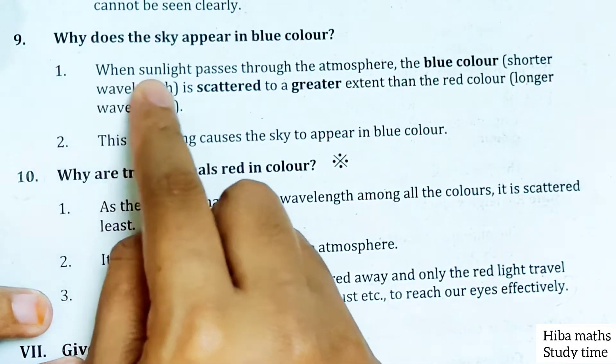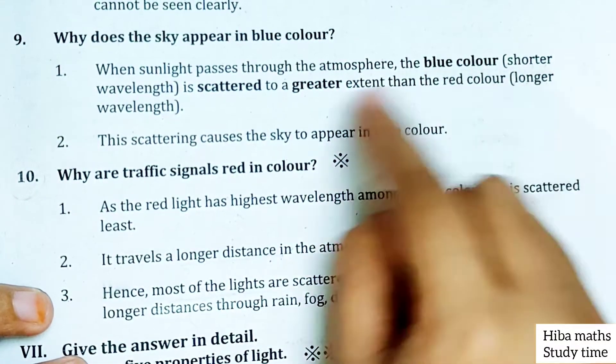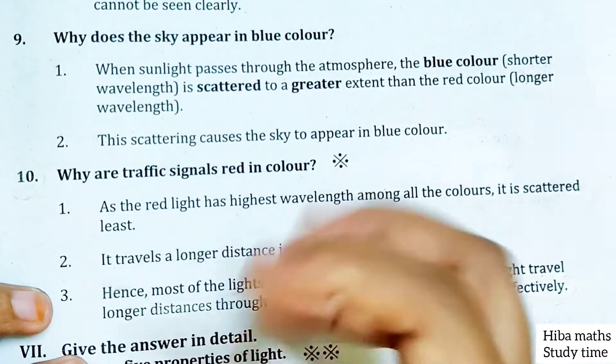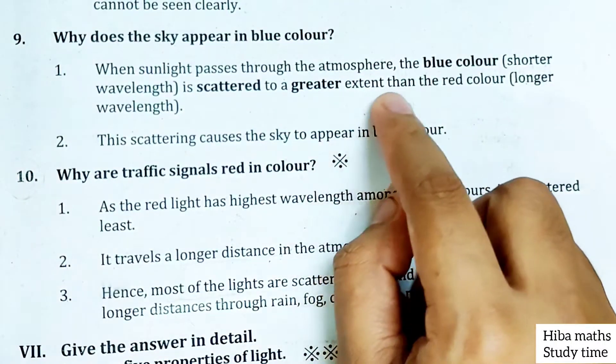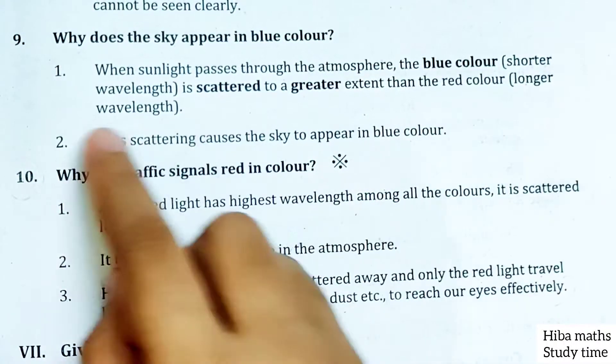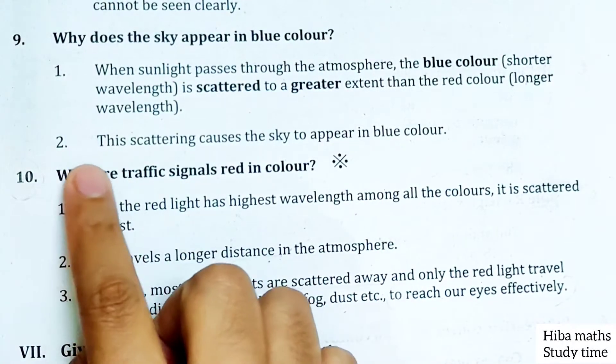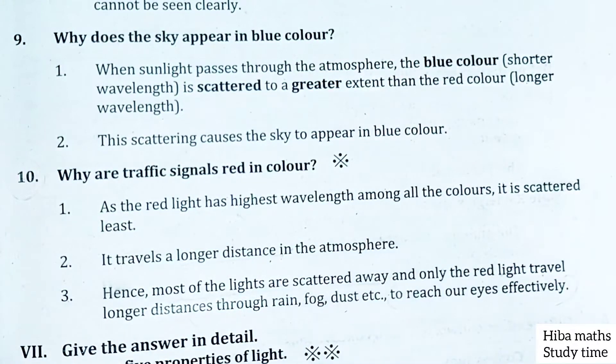Why does the sky appear blue in color? When sunlight passes through the atmosphere, the blue color is scattered to a greater extent than the red color. This scattering causes the sky to appear blue in color.